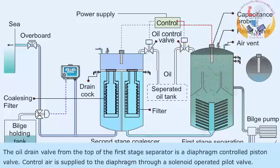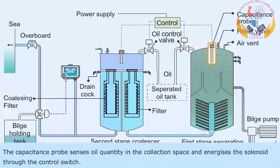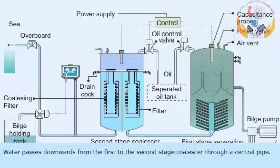The oil drain valve from the top of the first stage separator is a diaphragm controlled piston valve. Control air is supplied to the diaphragm through a solenoid operated pilot valve. The capacitance probe senses oil quantity in the collection space and energizes the solenoid through the control switch.